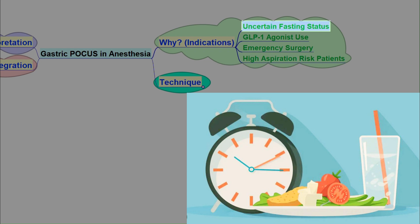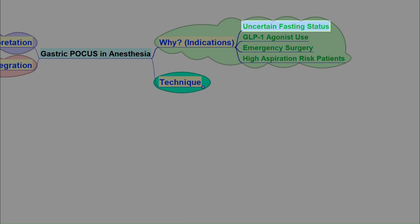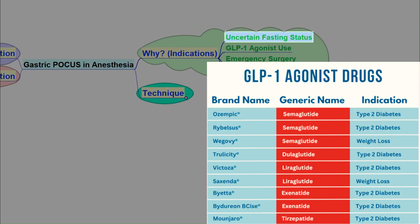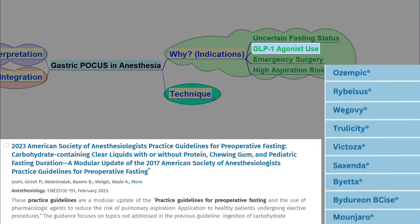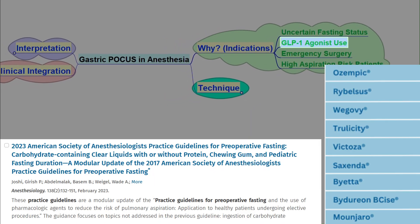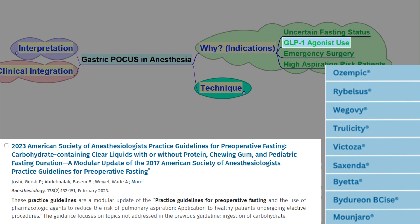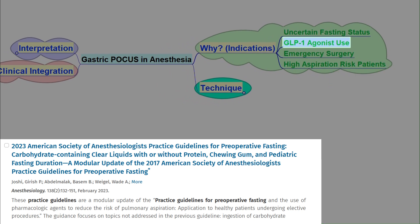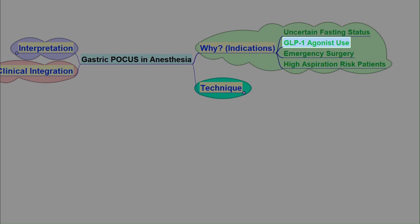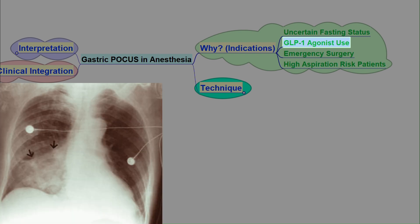Second, for the growing number of patients on GLP-1 agonists, like semaglutide. New ASA guidelines specifically recommend considering gastric ultrasound for these patients, as these medications significantly delay gastric emptying even with standard fasting. Third, in high-risk situations like emergency surgery, where aspiration risk is elevated.